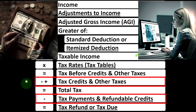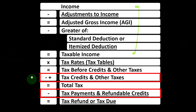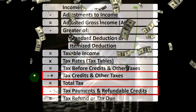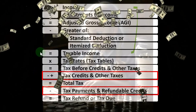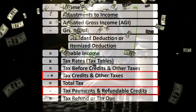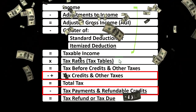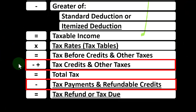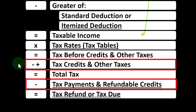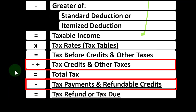When looking at credits, remember they are similar to deductions — we like both. However, if we had one dollar of credit versus one dollar of deduction, we typically want the credit, because the credit delivers the full dollar's worth of benefit. The deduction only reduces taxable income, which is good, but the benefit is limited to our tax rate.